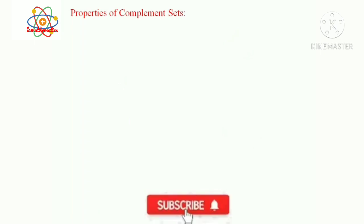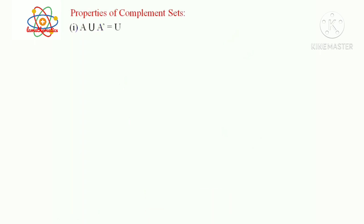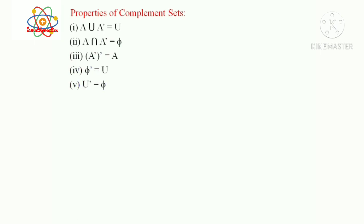Properties of complement sets: A union A' equals U; A intersection A' equals ∅; (A')' equals A; ∅' equals U; U' equals ∅.